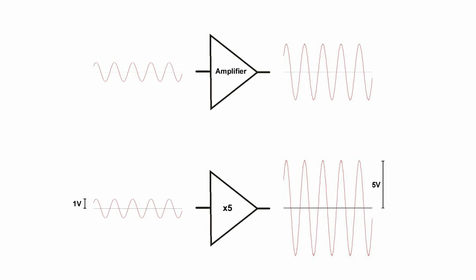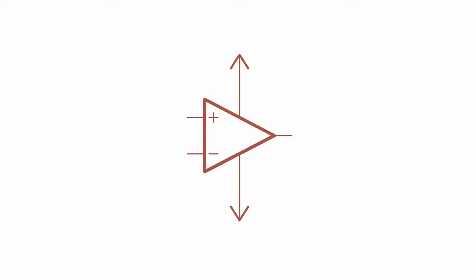Now the diagram I'm using here with a triangle is just a simplified symbol, so let's take a look at a more formal circuit diagram. A bare operational amplifier will have 5 important pins. Over here we have the output pin. Your output voltage would come out from here.